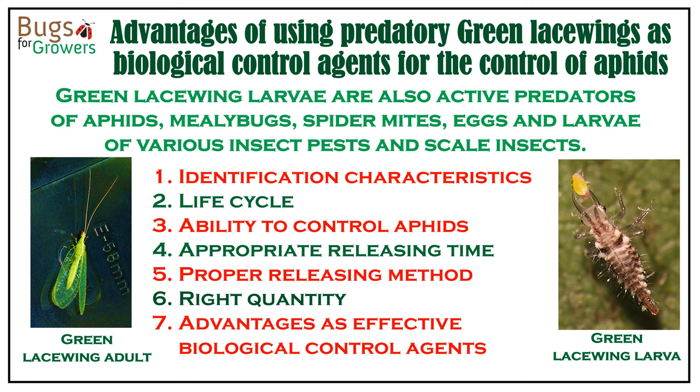Now I will talk about the advantages of using another predatory insect called green lacewing as a biological control agent for the control of aphids. Specifically, I will share with you their identification characteristics, life cycle, ability to control aphids, and appropriate timings and methods of their release in aphid-infested greenhouses, gardens, or fields.